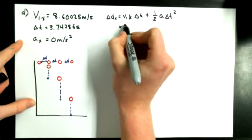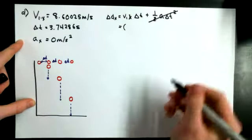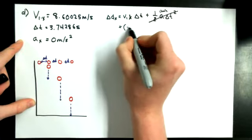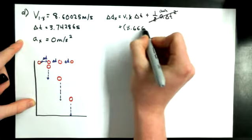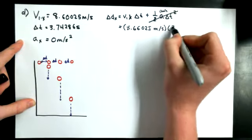Now we're going to be able to cross out the whole 1 half A delta T squared, because 0 times anything will end up being 0, so it's not important. So when we sub in our values, we have 8.66025 meters per second times 3.74286 seconds.